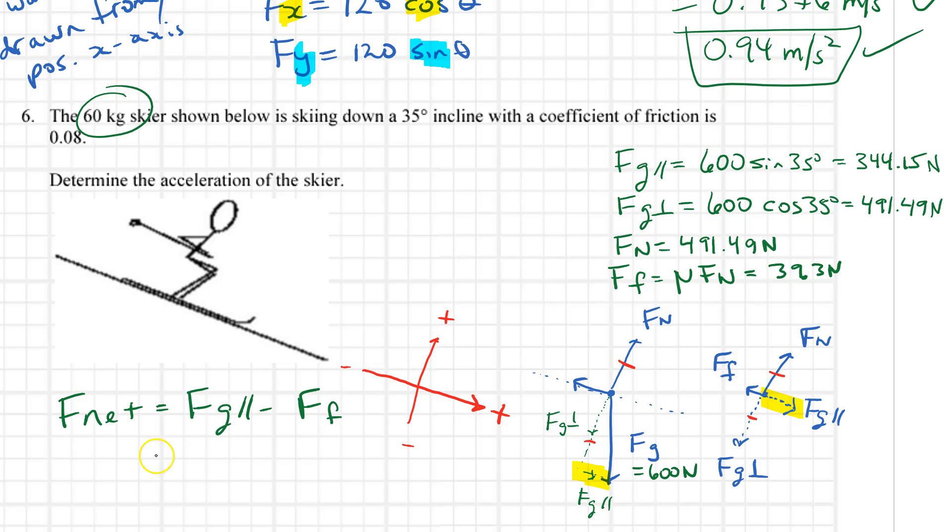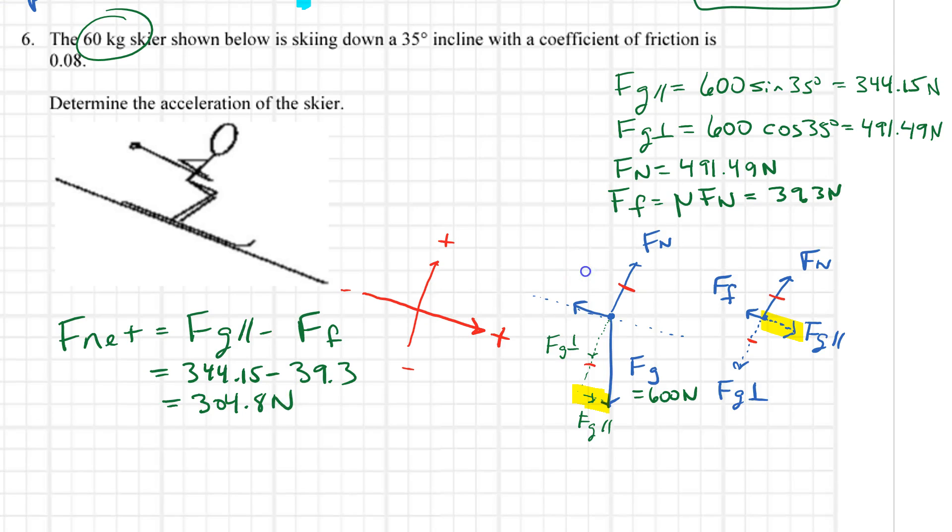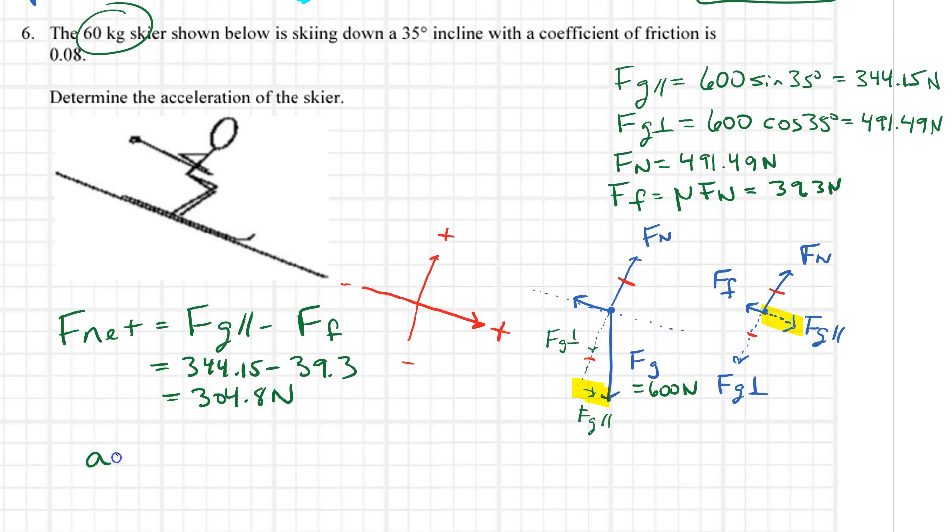I've got enough information now. This will be 344.15 minus 39.3. So my net force will be 304.8 newtons. To find the acceleration, the acceleration equals Fnet over M. When I divide that out, I get 5.08 meters per second squared.